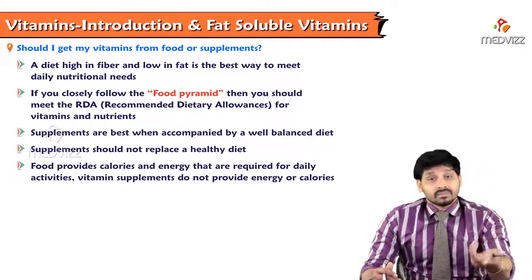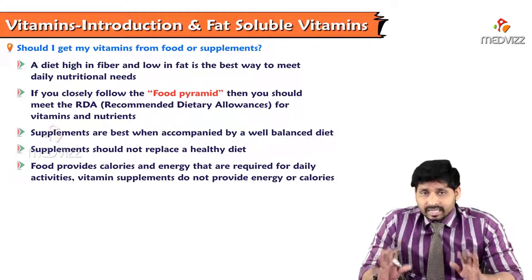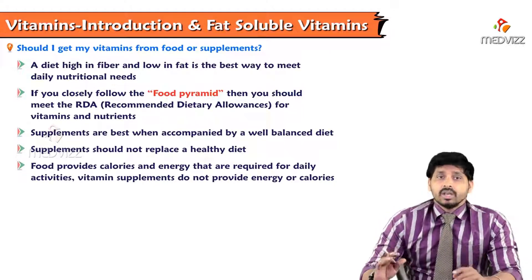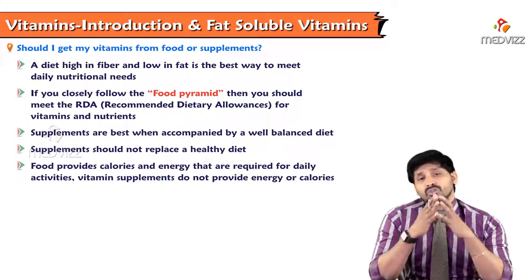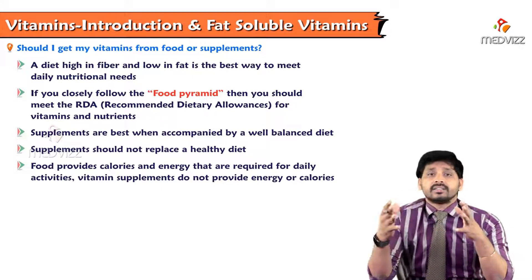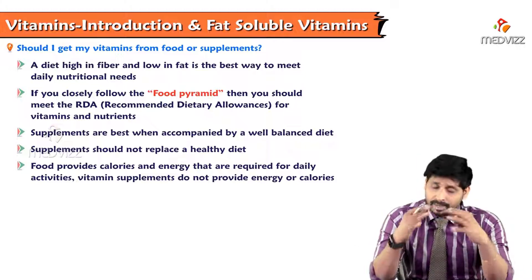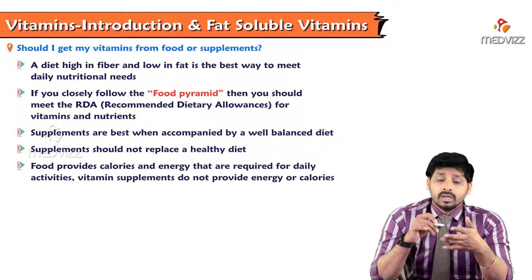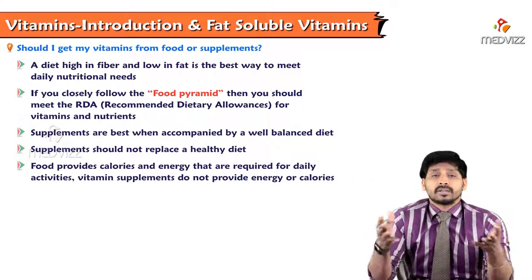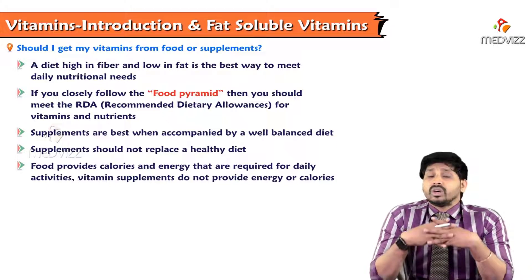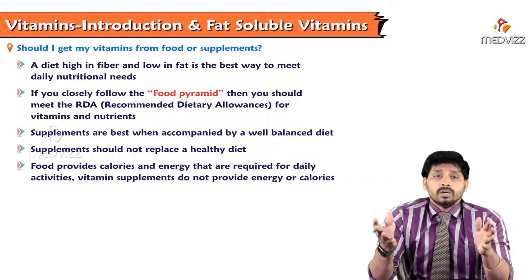Should you get vitamins from food or supplements? A diet high in fiber and low in fat is the best way to meet daily nutrition needs. Looking at the food pyramid, it should meet the recommended daily allowances for vitamins and nutrients. The main biomolecules — carbohydrates, lipids, proteins, and nucleic acids — require vitamins for proper digestion, absorption, and metabolism.